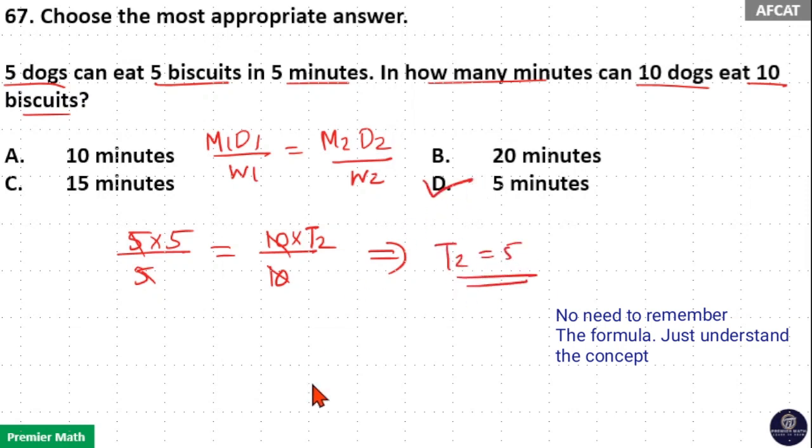So, option D is your answer. That is, 10 dogs can eat 10 biscuits in 5 minutes.